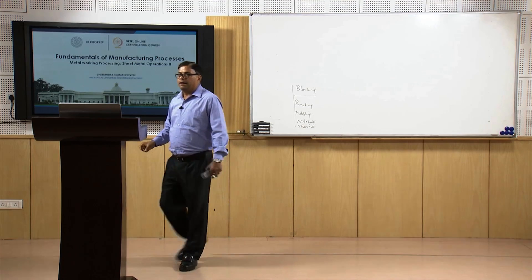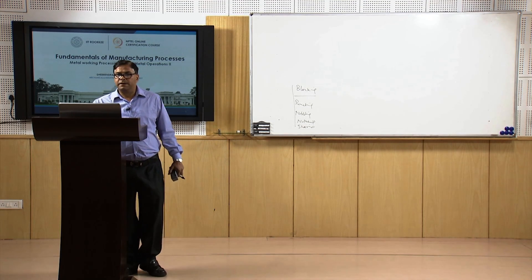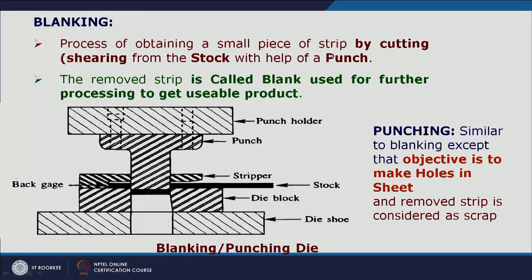In blanking, the process of obtaining a small piece of metal from the sheet by cutting/shearing using punch and die is called blanking — the removed piece is the blank, used for further processing. In punching, the objective is to make the hole, and the removed material is just scrap.